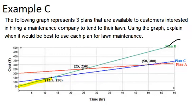So plan C is the cheapest from 12.5 hours it's still the cheapest because it's the lowest line all the way to 50 hours at which point it's the same cost as plan A and then for the last 10 hours between 50 hours and 60 hours plan A is the cheapest.